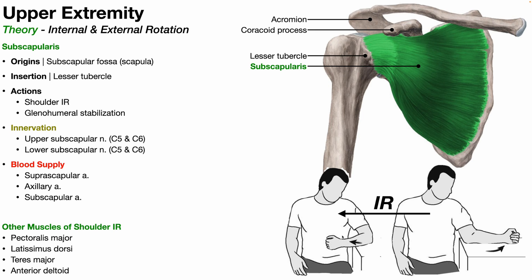The subscapularis is the only rotator cuff muscle that facilitates internal rotation, but other muscles also help out: the pectoralis major, the latissimus dorsi, teres major — note that it's not teres minor — and the anterior deltoid.